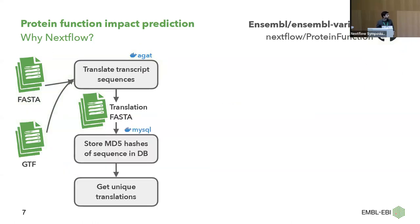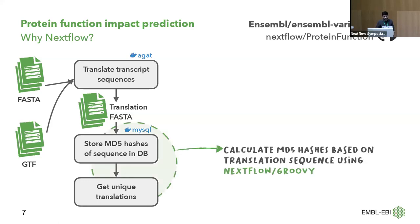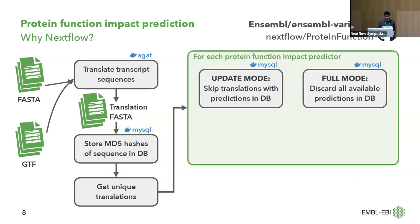From the FASTA files, we store MD5 hashes of sequences in the database to see which ones we've already processed. We get unique translations — for each different protein and for each different human genome assembly, we can just do the unique translations. All of this is done using Nextflow and Groovy, specifically the calculation of MD5 hashes, which makes it much easier to process.